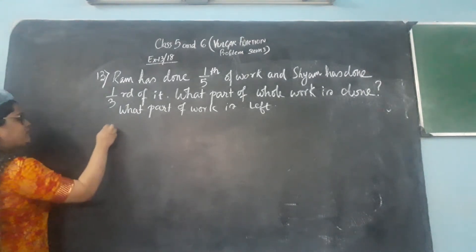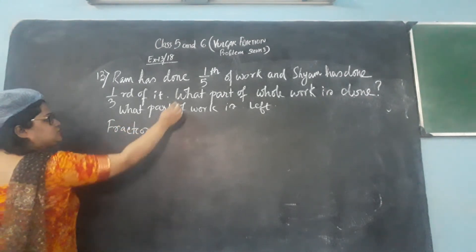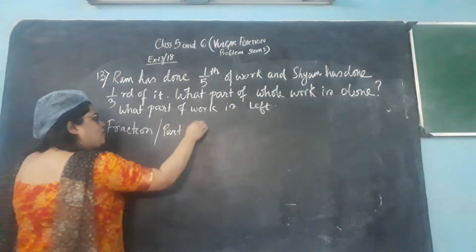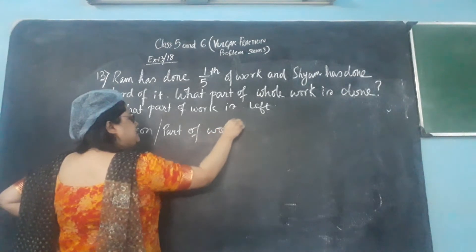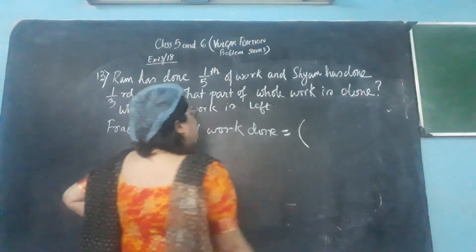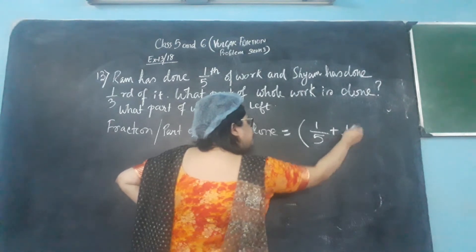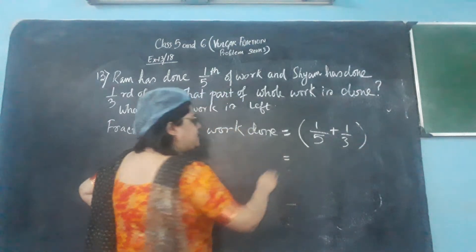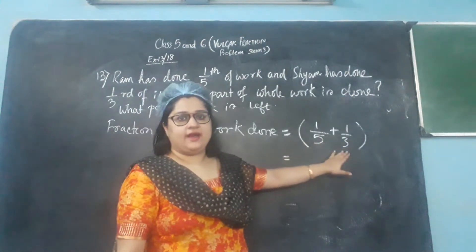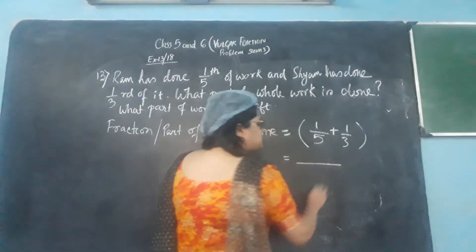This is a very easy question. The question is: what part of the whole work is done? So the fraction or part of work done — you will add up what they are doing individually: one-fifth plus one-third. This is fractional addition. When you have to add numbers like this, you have to take out the LCM and change to a common denominator.